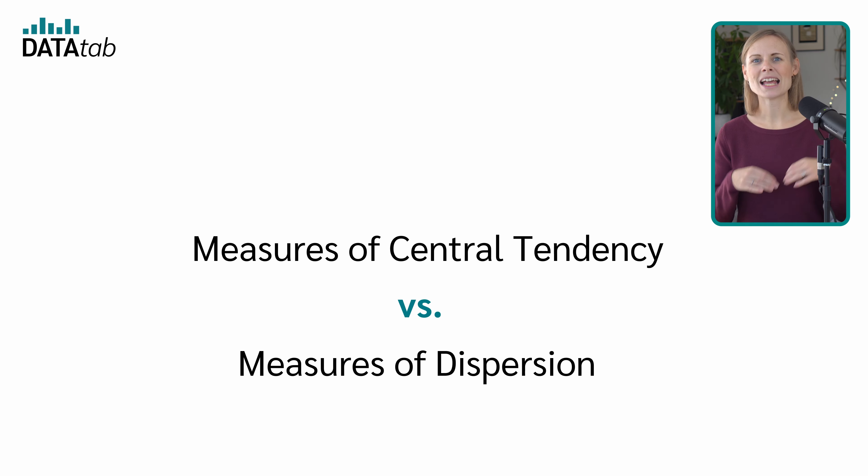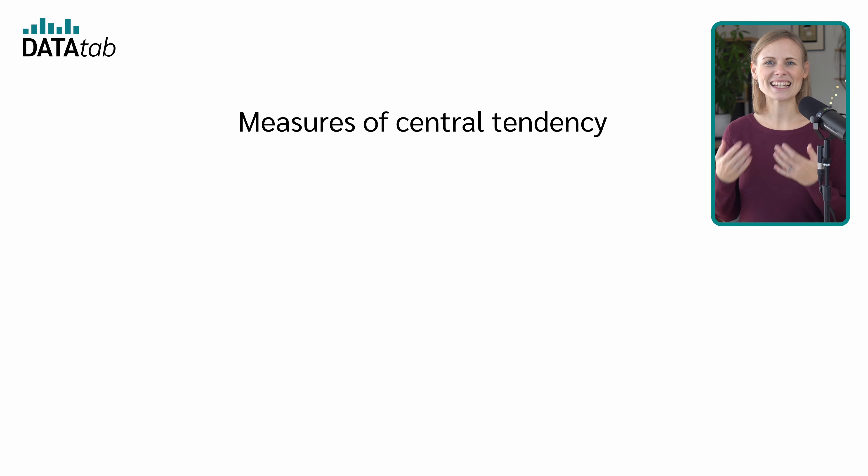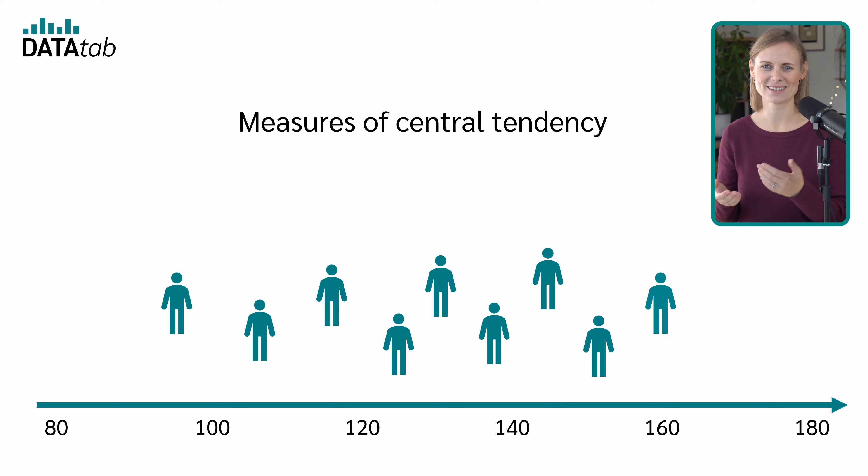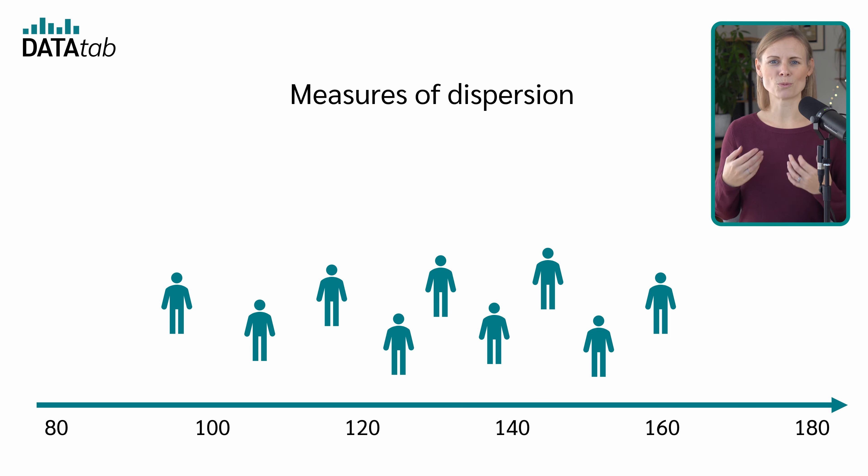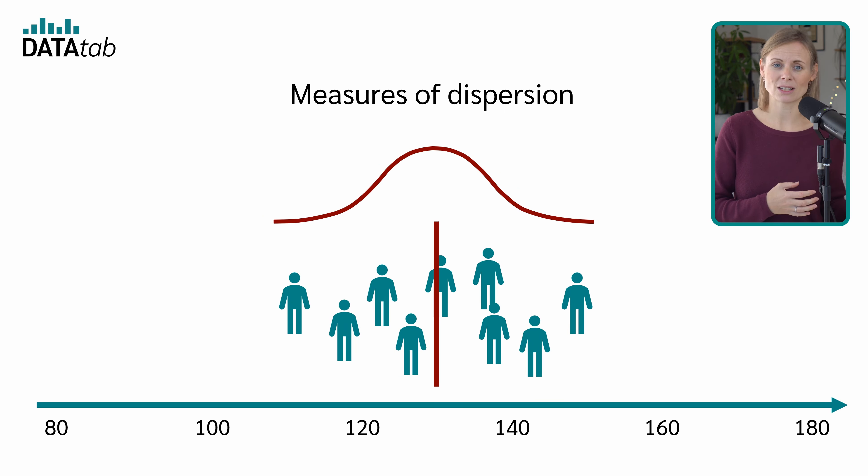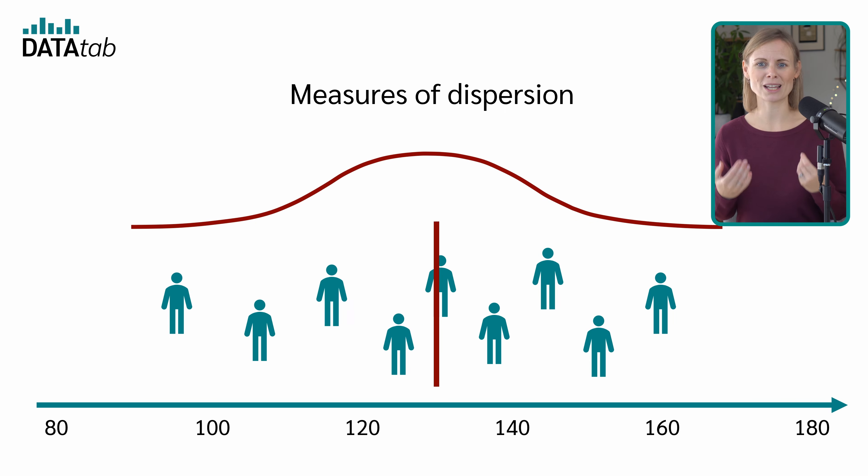Let's briefly compare measures of central tendency and measures of dispersion. Let's say we measure the blood pressure of patients. Measures of central tendency provide a single value that represents the entire dataset, helping to identify a central value around which data points tend to cluster. Measures of dispersion, like the standard deviation, the range and the interquartile range, indicate how spread out the data points are, whether they are closely packed around the center or spread far from it.